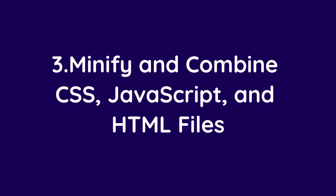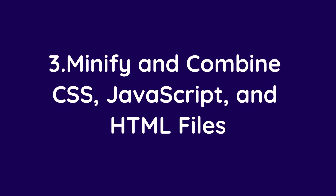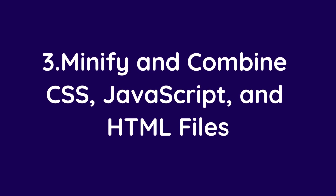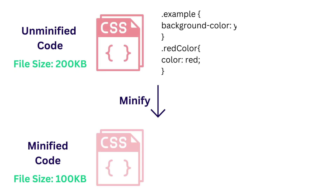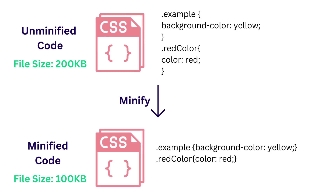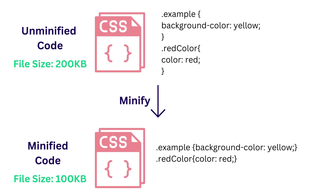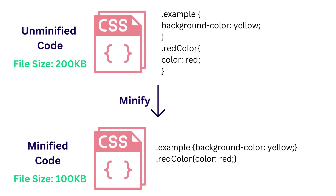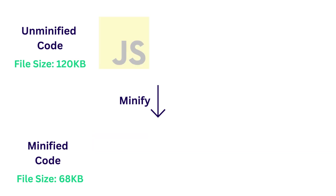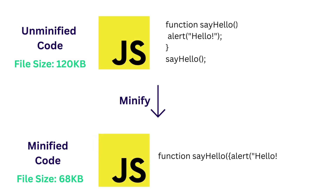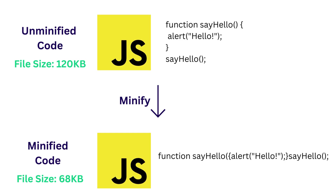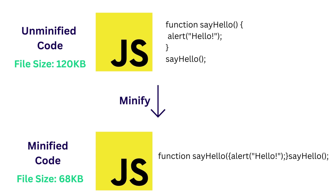Let's jump to the next technique — minify and combine CSS, JavaScript and HTML files. Minification is a process of optimizing CSS and JavaScript files by removing spaces or shortening symbols in source code. You can achieve this using any minification online tools, and most websites use this process combining them into a single bundle.